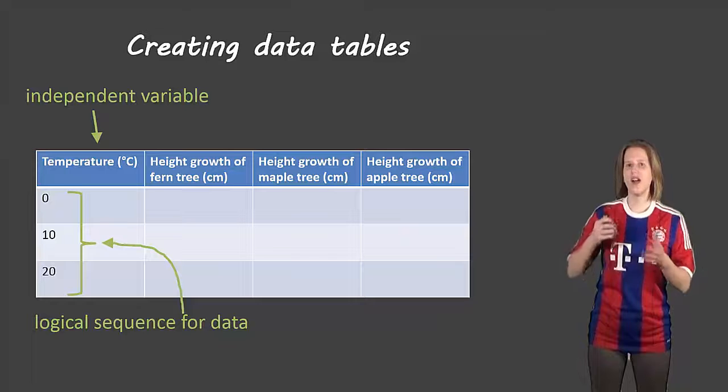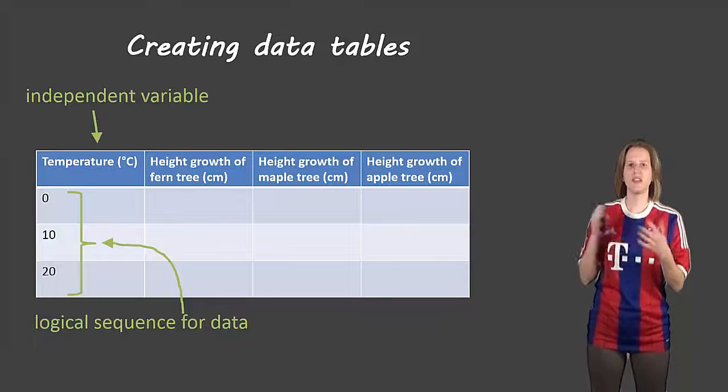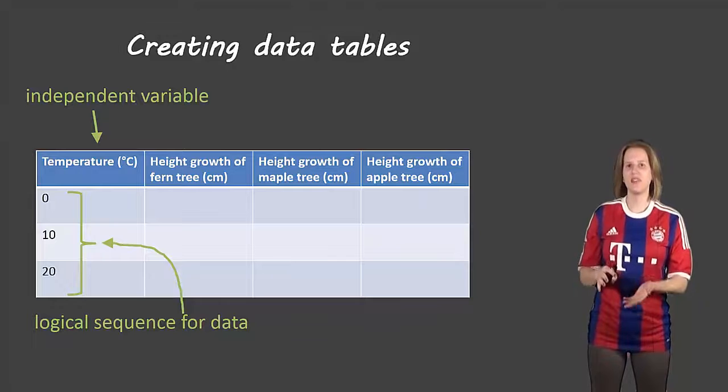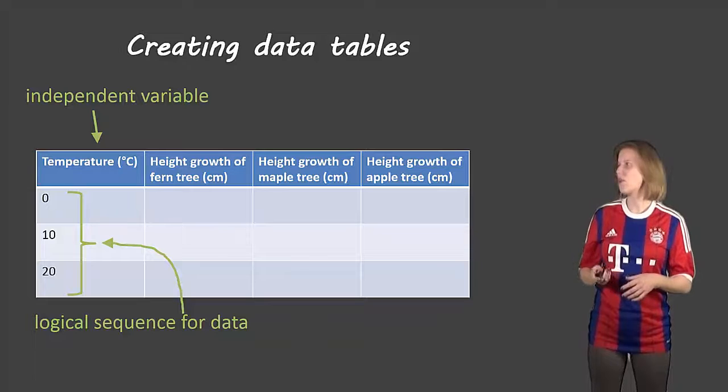So independent variable goes in the first column and you use a logical sequence in order to put your data. So instead of starting off at zero degrees, then going to 20 and then going down to 5 and then going to 50, it doesn't really make sense. So you got to put them in a logical order.